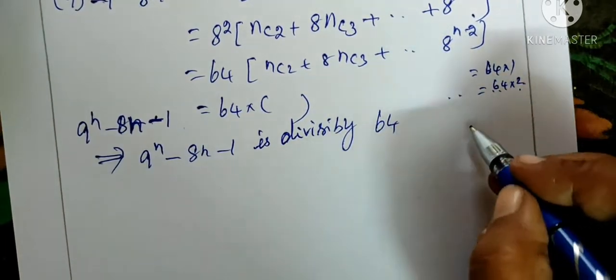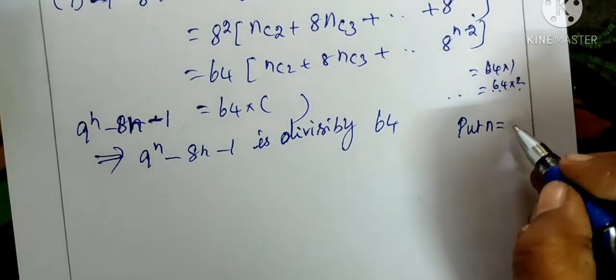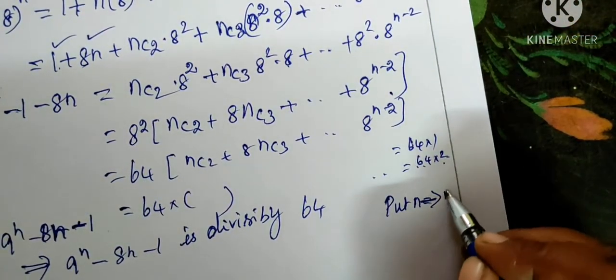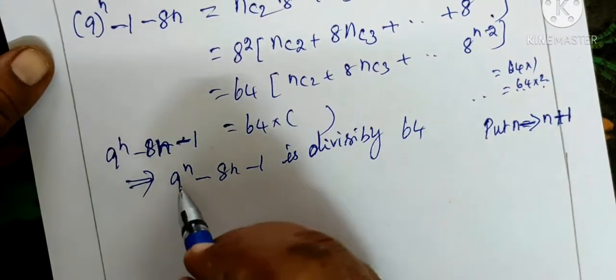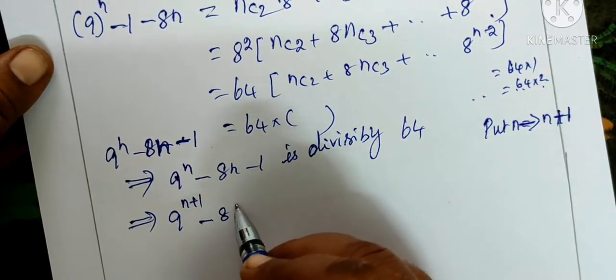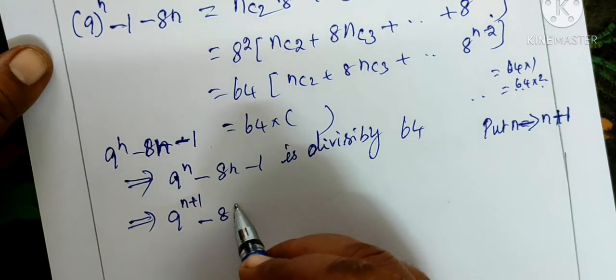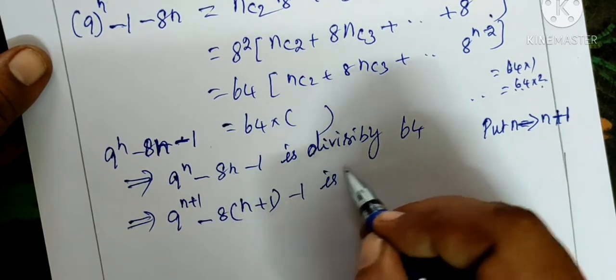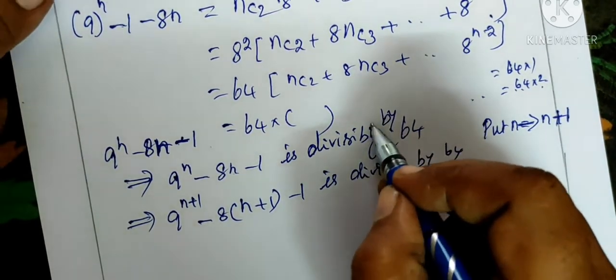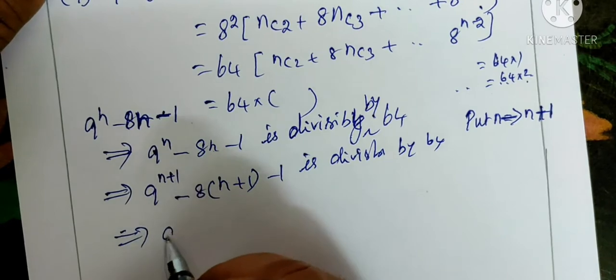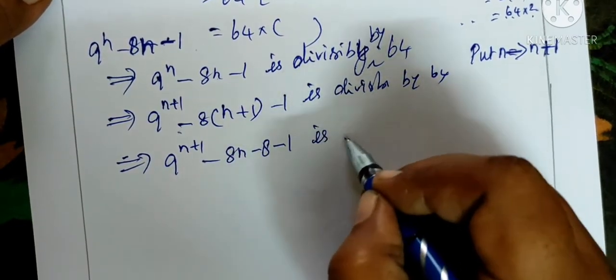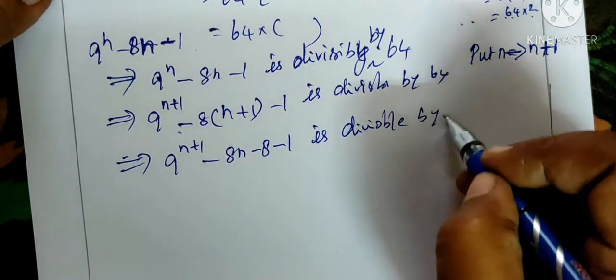Now we put n equal to n plus 1. So we replace n with n plus 1. So 9 power n plus 1 minus 8 bracket n plus 1 minus 1 is divisible by 64.